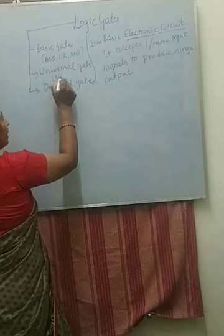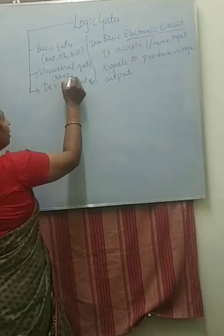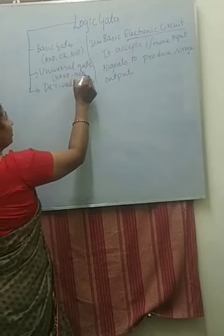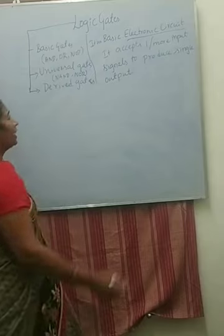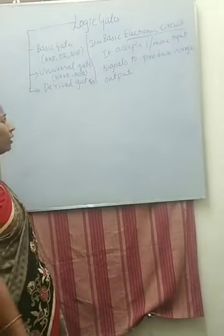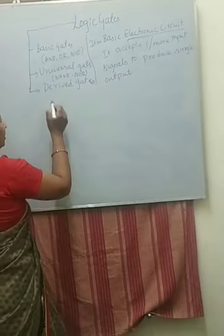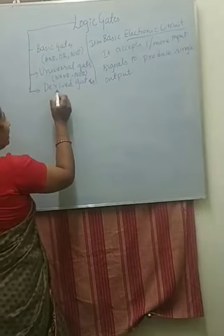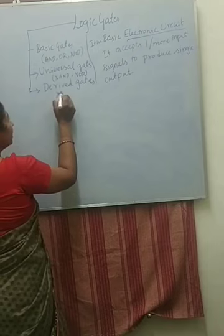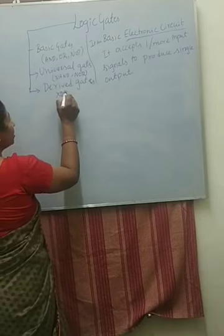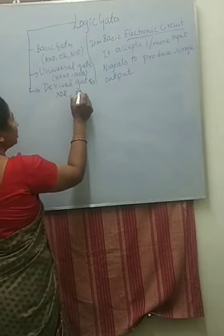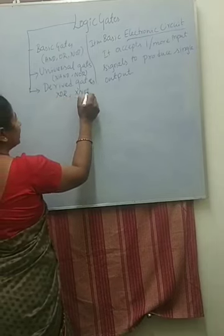There are two universal gates. One is the NAND gate, and another one is the NOR gate. For derived gates, there are two: one is the XOR gate, and another one is the XNOR gate.